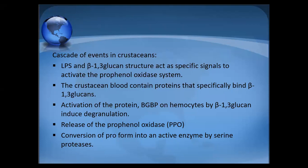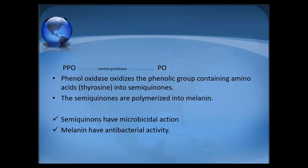Once beta-glucan binding proteins on hemocytes bind to beta-glucan, they activate and degranulate the granular cells. The pro-phenol oxidase is oxidized to form serine protease, which acts on PPO to form phenol oxidase. Phenol oxidase oxidizes phenolic group-containing amino acids like tyrosine into semi-quinones. These semi-quinones polymerize to form melanin. Melanin itself acts as a microbicidal agent. In shrimp infections, black patches are seen due to melanin formation, which has antibacterial activity. Semi-quinones also have microbicidal activity.